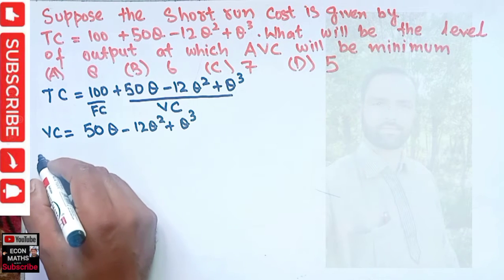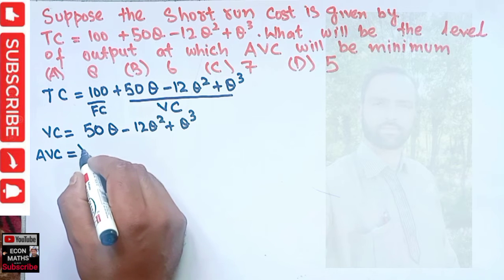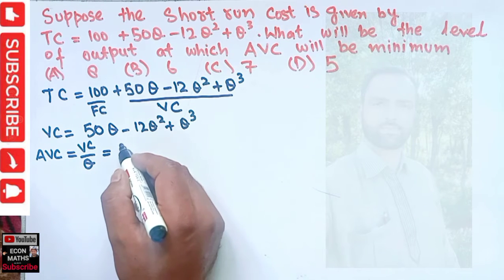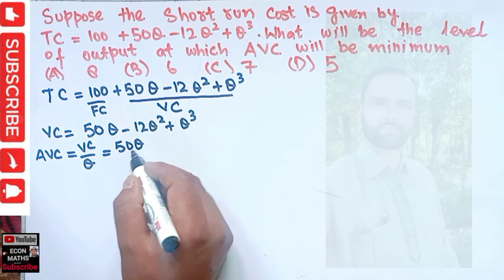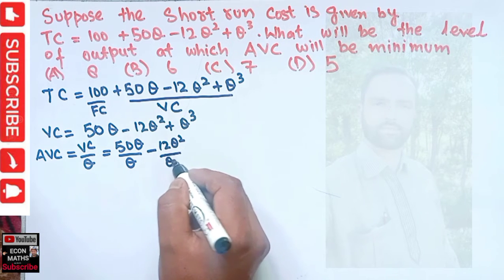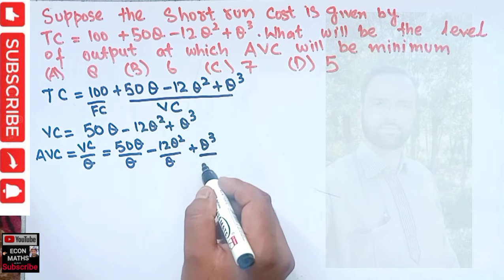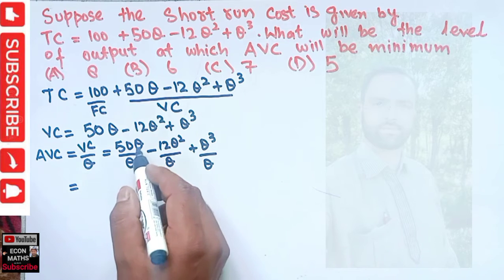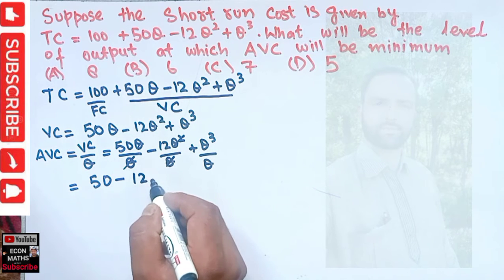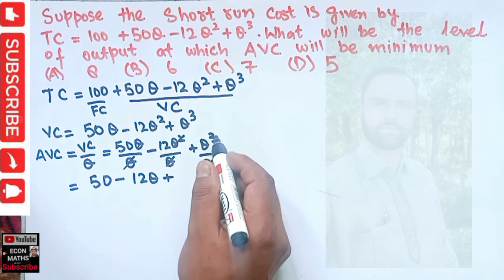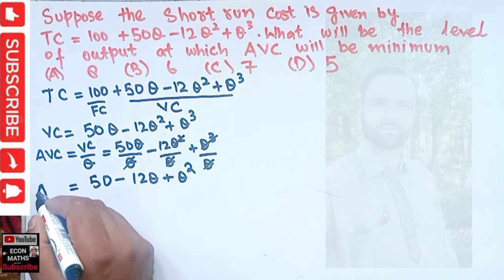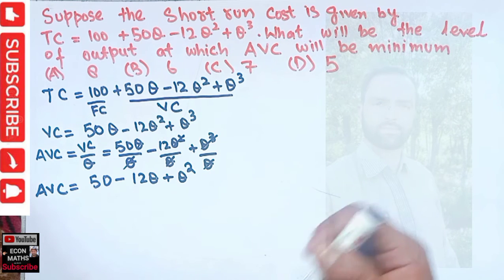Now we have to find the average variable cost. Average variable cost is simply variable cost divided by output. Dividing each term by q: 50q/q − 12q²/q + q³/q. The q's cancel, and we are left with AVC = 50 − 12q + q².